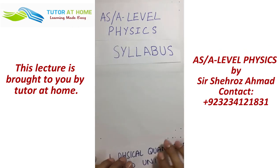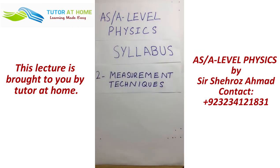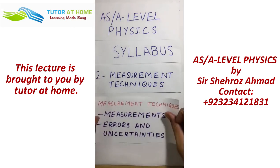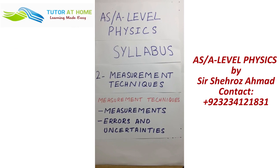After that, we will discuss the second part of our first content, which is measurement techniques. We will discuss measurement techniques and instruments, and errors and uncertainties. The section of errors and uncertainties is very important because in Paper 5, the second question is related to uncertainty, and we need to understand uncertainties.